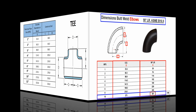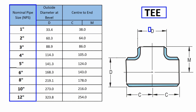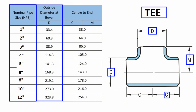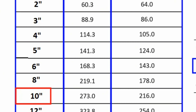Now let's look at the equal tee dimension chart for the 10-inch butt weld equal tee dimension. The nominal pipe sizes, NPS, of equal tees are shown in the first column of this table. The letter D written on the equal tee indicates the outside diameter and is shown in this column. The letters M and C written on the equal tee indicate the center-to-end dimension of the equal tee and are shown in this column. Since the pipeline is 10-inch, we look at the row written as 10-inch in the NPS column. This table shows that 10-inch butt welded equal tee has an outside diameter of 273 millimeters and a center-to-end dimension of 216 millimeters.